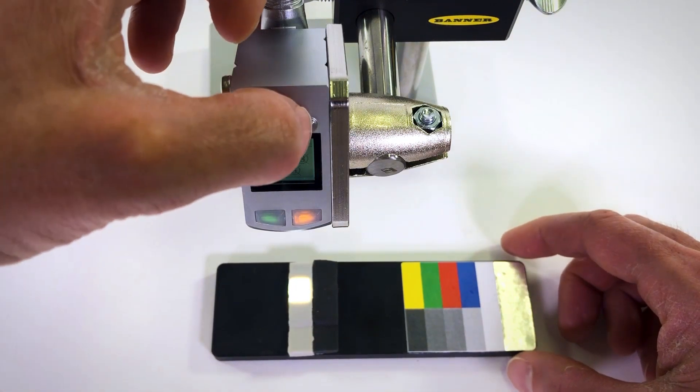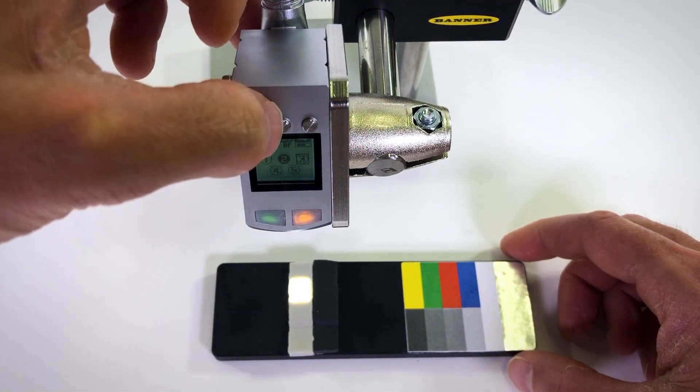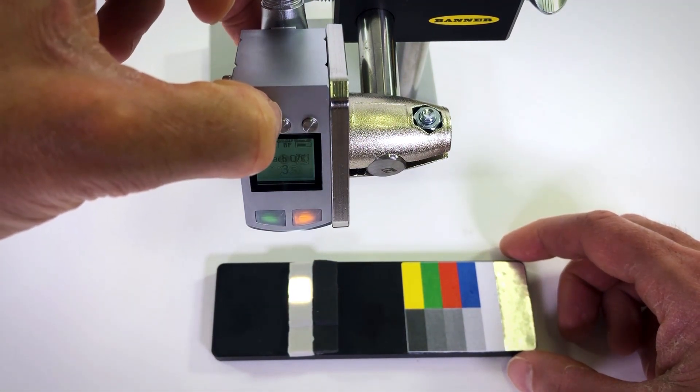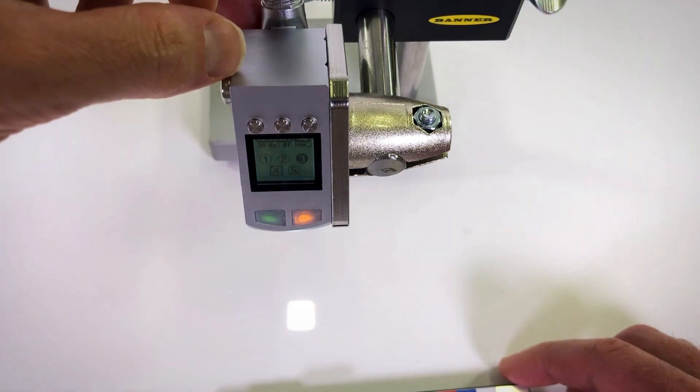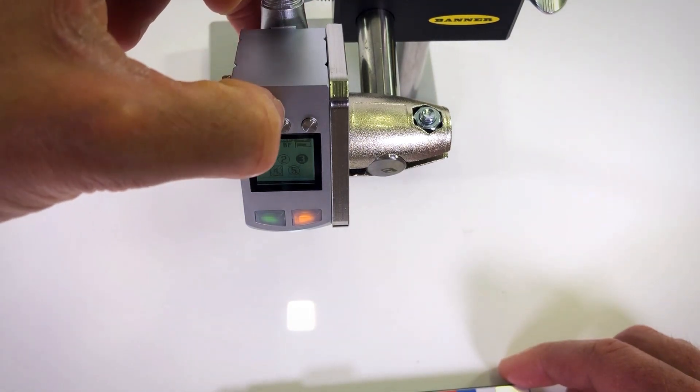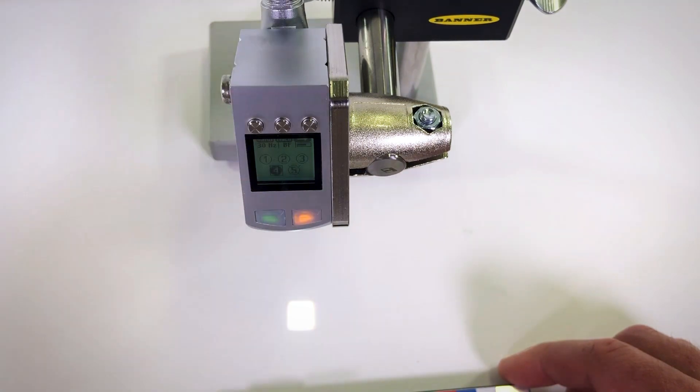I repeat this step for target 3 and finally I use output 4 to teach the background because in best fit mode the sensor will always provide an output based on what color is closest to the taught conditions.